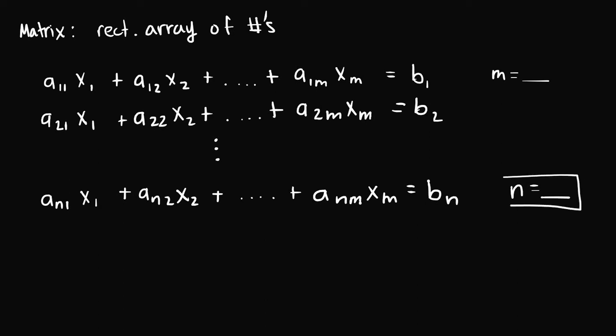The values n and m represent the size of this system of linear equations, or the size of the matrix we can write this system in. We say a matrix is n by m in size, meaning it has n rows and m columns.